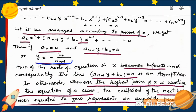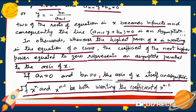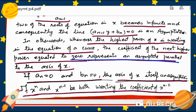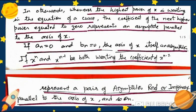When two of the roots of this equation in x become infinite, consequently the line aₙ₋₁y + bₙ = 0 is an asymptote. In other words, whenever the highest power of x is wanting in the equation of a curve, the coefficient of the next highest power of x equated to zero represents an asymptote parallel to the axis of x. If aₙ = 0 and bₙ = 0, then the axis of x itself is an asymptote.